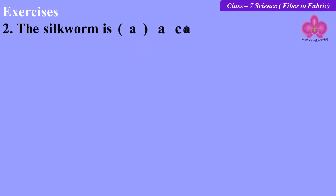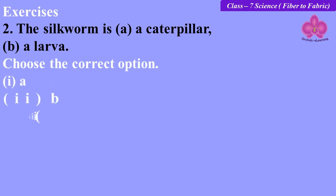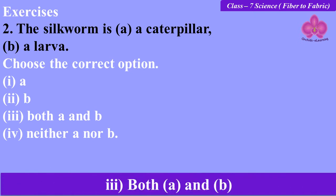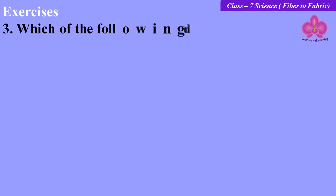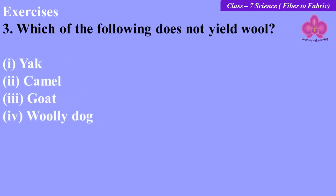Is a silkworm: (a) a caterpillar, (b) a larva? Choose the correct option: (a), (b), both (a) and (b), or neither (a) nor (b). The answer is: both (a) and (b).